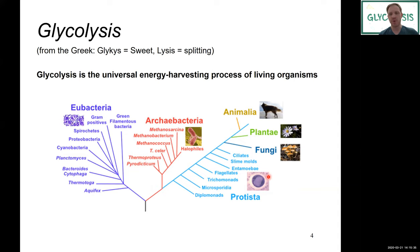Glycolysis is really one of the major energy-generating pathways across the kingdom of life. In fact, variations of glycolysis have been found in each and every organism discovered so far — it is one of the truly unifying metabolic pathways. The name itself comes from the Greek: 'glycos' meaning sweet and 'lysis' meaning splitting. So what we want to do is split and cleave sugars to release energy — that's what glycolysis is all about.